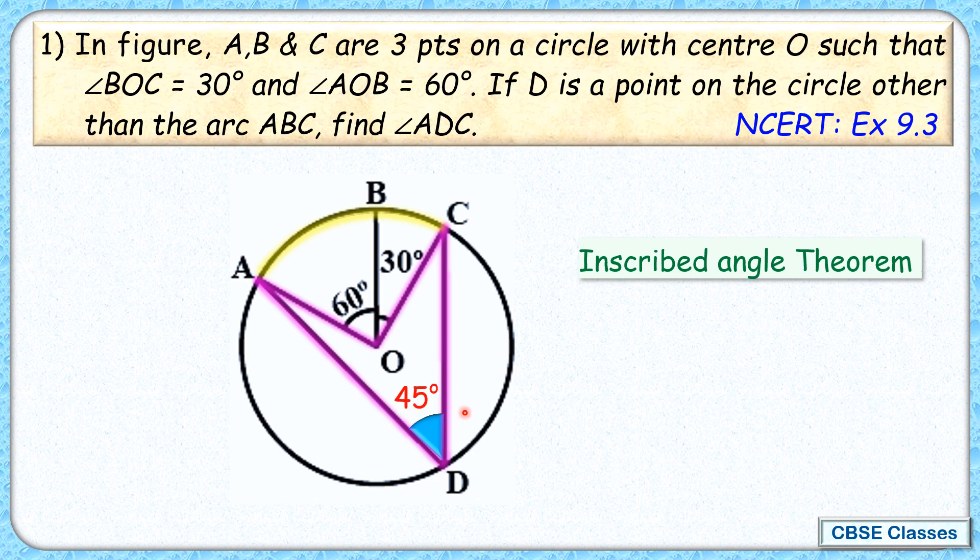So it will subtend 45 degrees at point D. Thus we can say angle ADC is 45 degrees. And that's our answer.